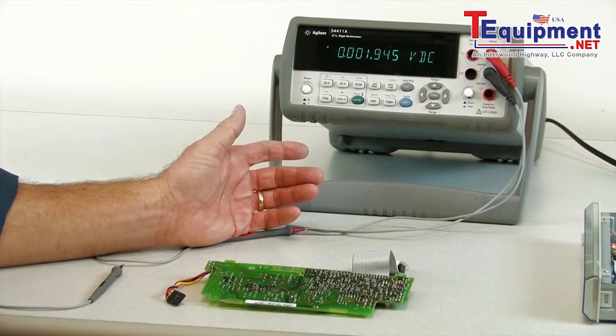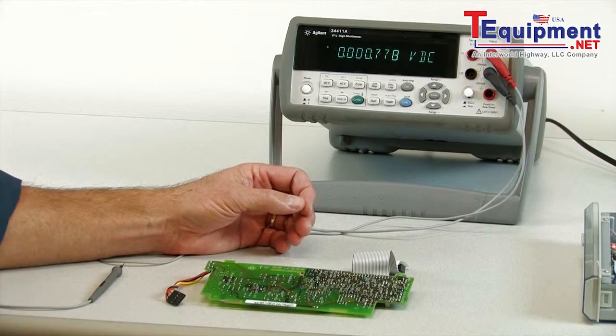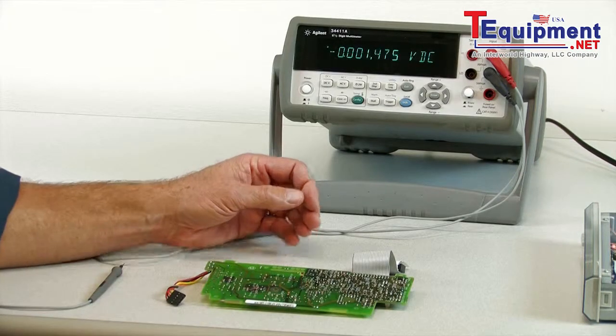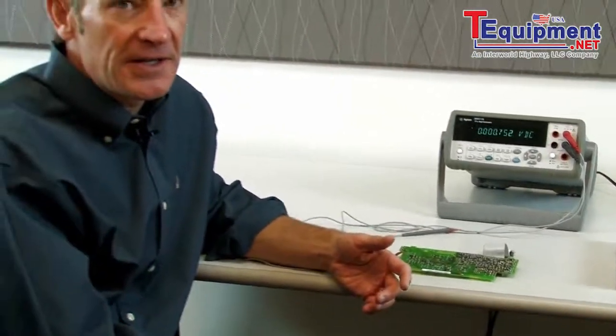Lastly, the DMM features a lot of speed versus accuracy trade-offs. If you're unsure of a setting, you can always stick with the defaults. The defaults will have a good trade-off between accuracy and speed. Hopefully you've learned some new tips and tricks for the next time you're troubleshooting with your bench DMM.